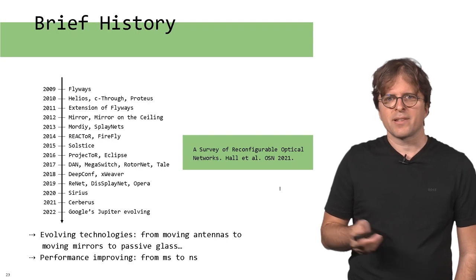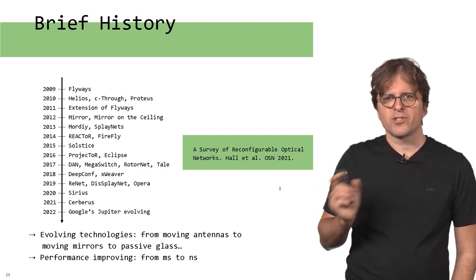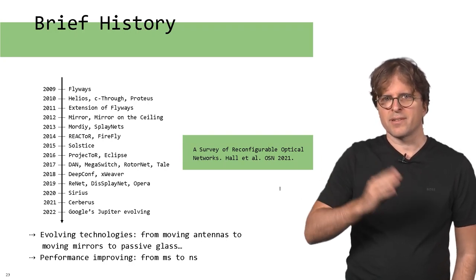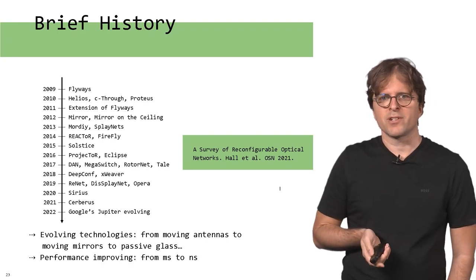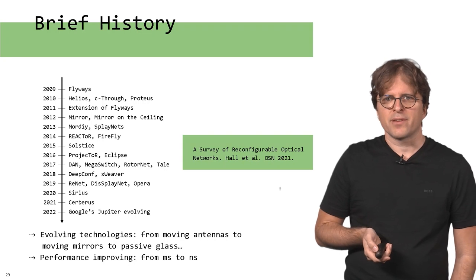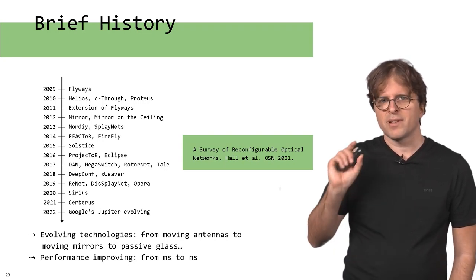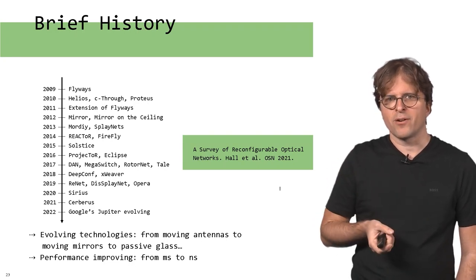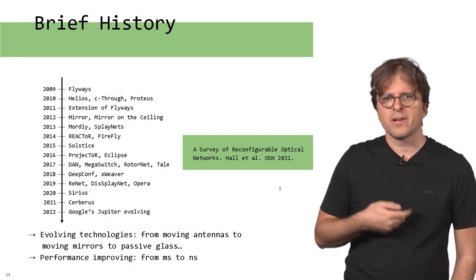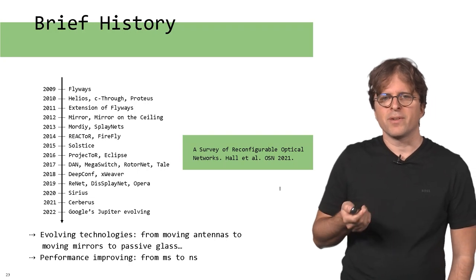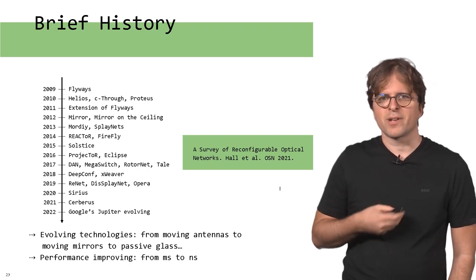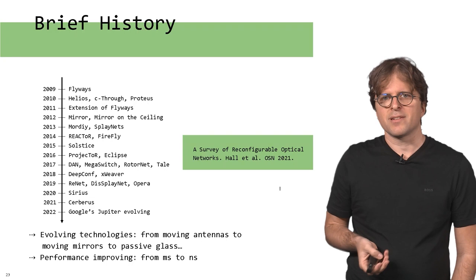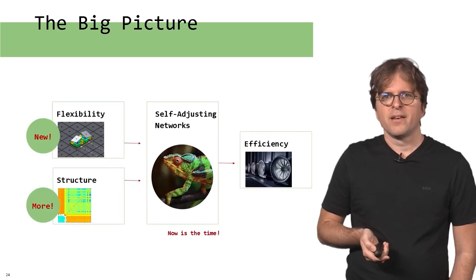One interesting aspect is that researchers noticed that if you change the interconnect by moving antennas, that can be quite slow. More recently, for example in Microsoft's technology Sirius, the switch is just a passive glass, and the connection can be changed by changing the laser color. This can be a very fast way to reconfigure. Going from moving antennas to moving mirrors to this passive glass technology, you can go from milliseconds to microseconds to nanoseconds in the reconfiguration speed.